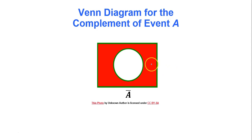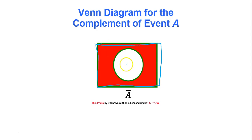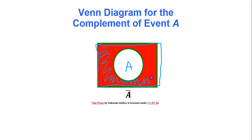If you look at a Venn diagram for the complement of event A: if the rectangle filled with red represents the entire sample space, and the inner circle represents A, it's the red space on the outside that represents the opposite of A — everything not in circle A but still in the sample space. That's my A bar.